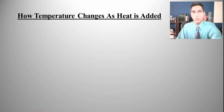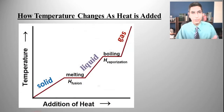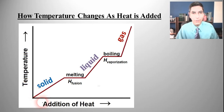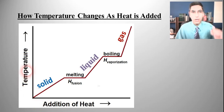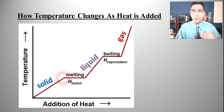So how does temperature change as we add heat to a substance? Let's take a look at this graph. On the x-axis we have the addition of heat and on the y-axis we have the temperature. As you add heat to a solid its temperature is going to rise, and then it's going to get to the melting point.